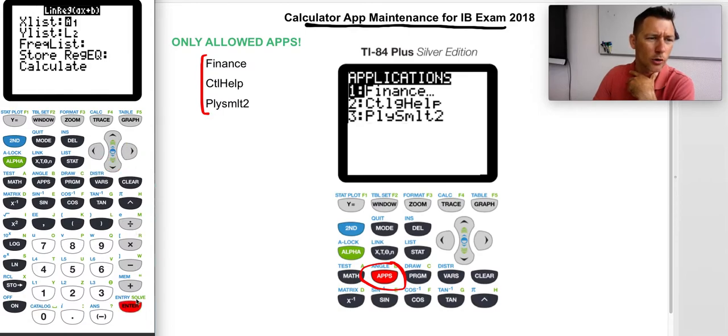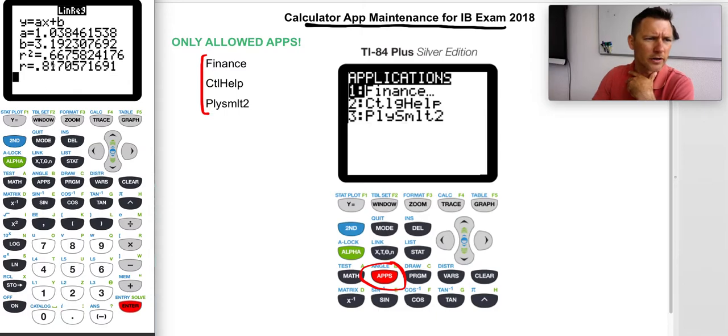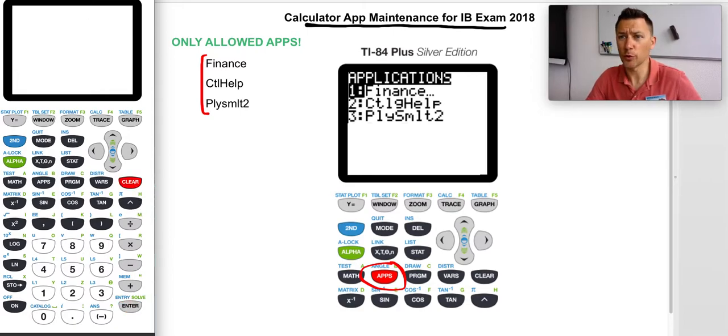And now when you play that same game and look for a correlation coefficient, now it'll give you those r values. Cool. Just wanted to remind you of that piece. Cool, there you go.